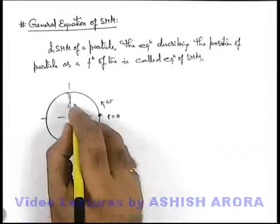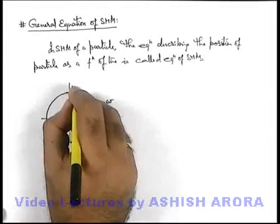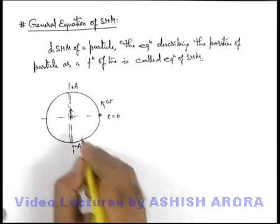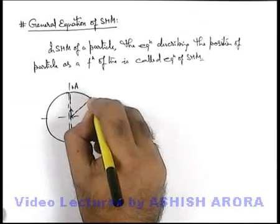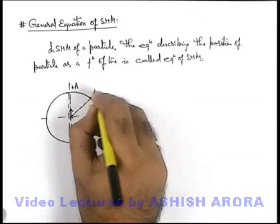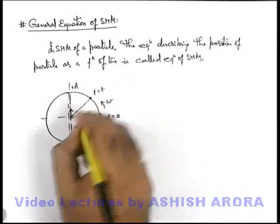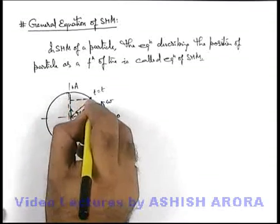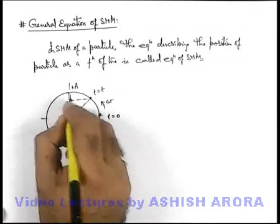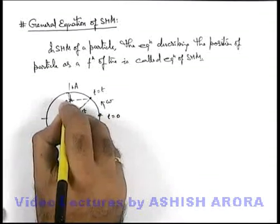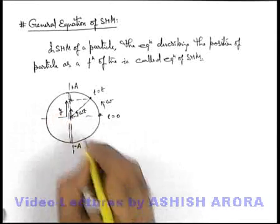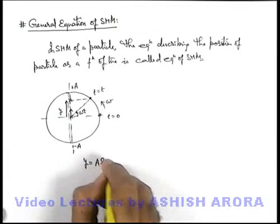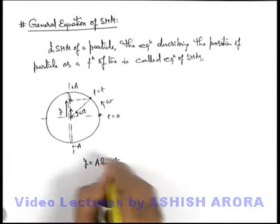Here we can say if its amplitude is A, then we can state at any time the particle, when it is located at an angle omega t, the displacement of the projection which is executing SHM can be directly given as y is equal to A sine of omega t.